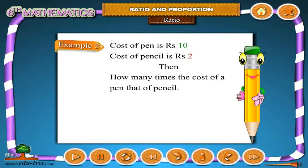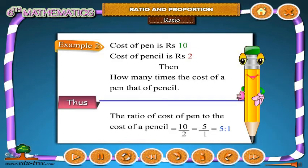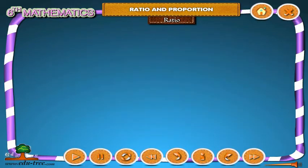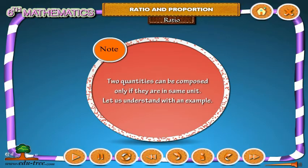Example 2: The cost of a pen is 10 rupees and the cost of a pencil is 2 rupees. Then how many times is the cost of the pen compared to that of the pencil? Thus, the ratio of cost of pen to cost of pencil is 10 by 2, which equals 5 by 1, which equals 5 ratio 1.